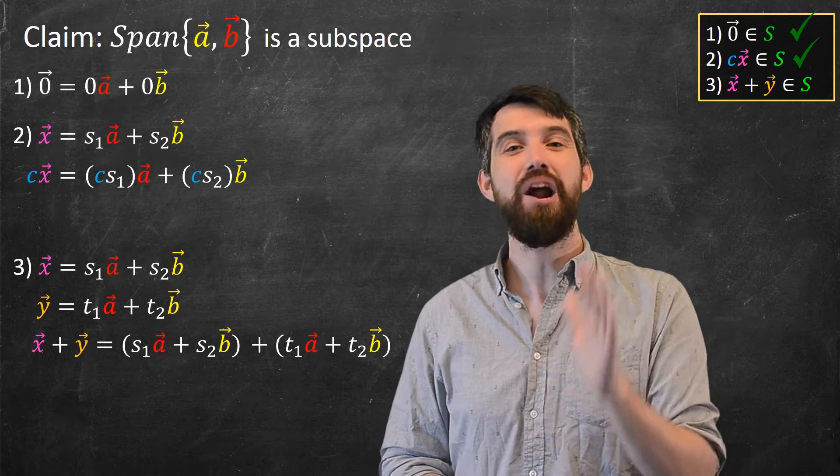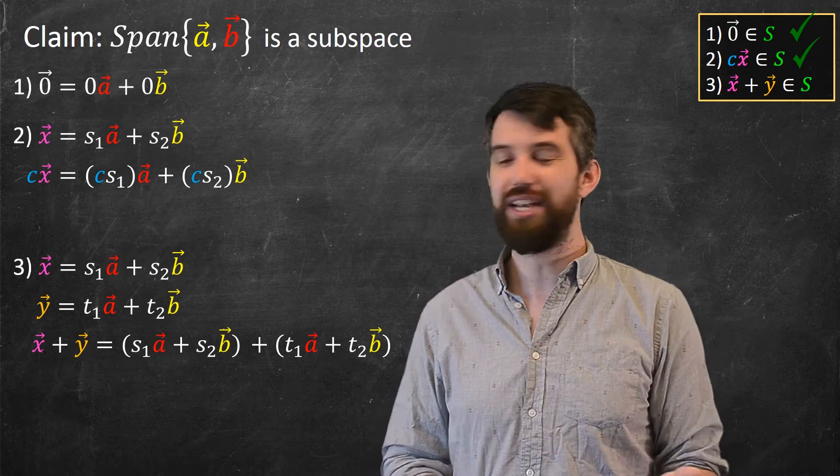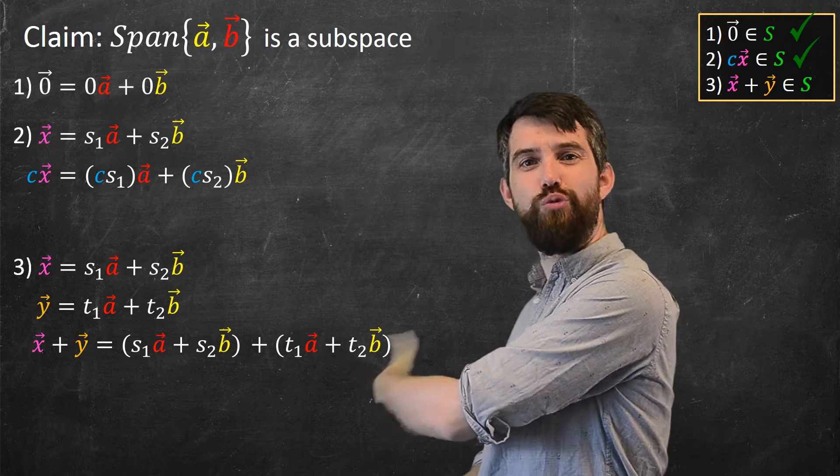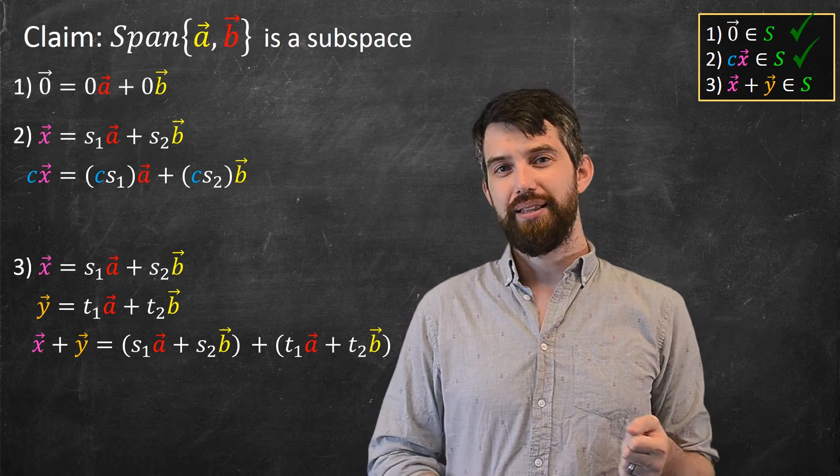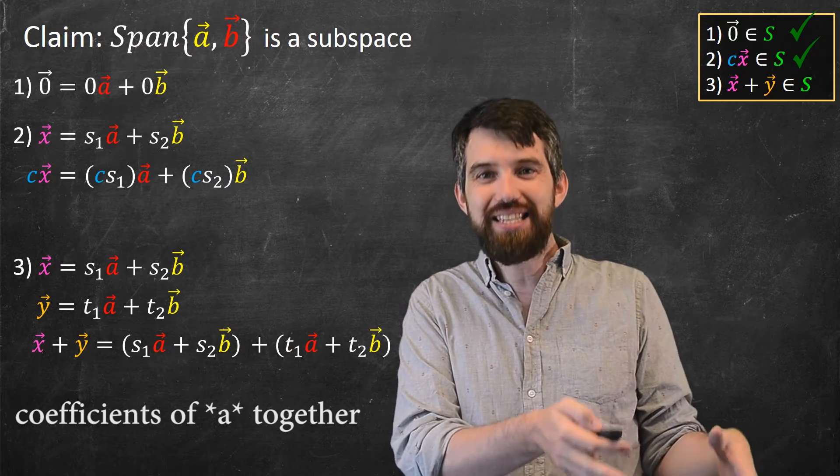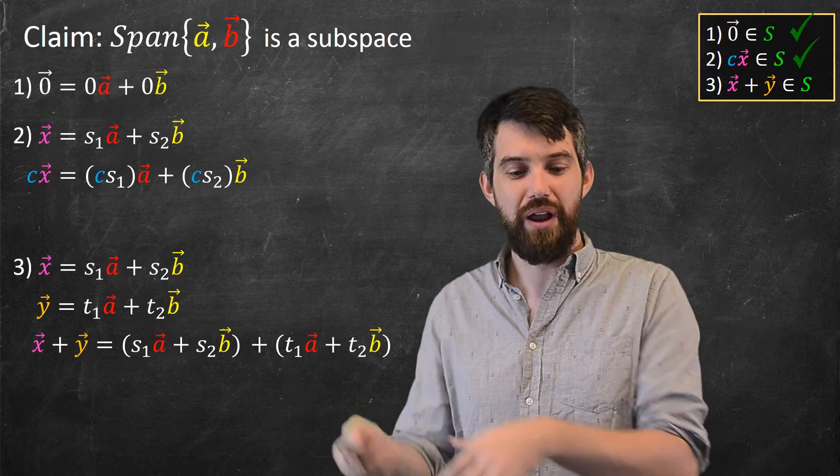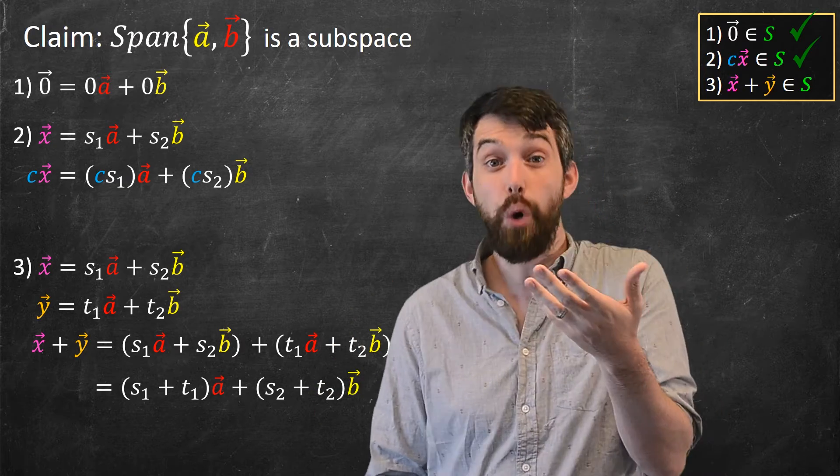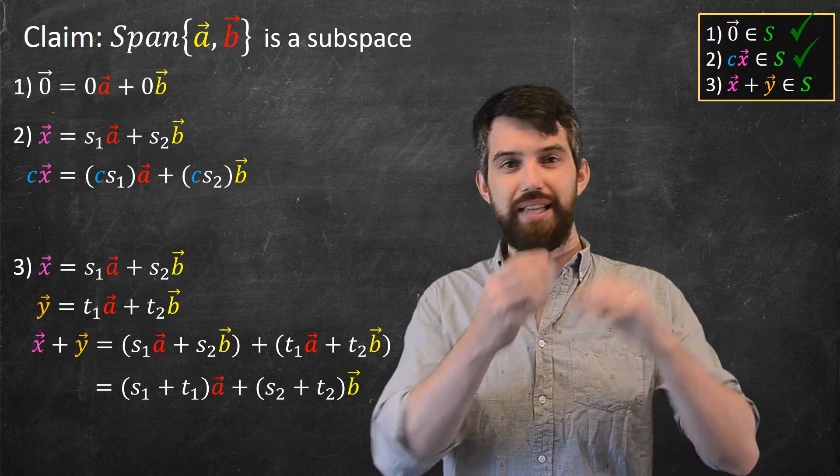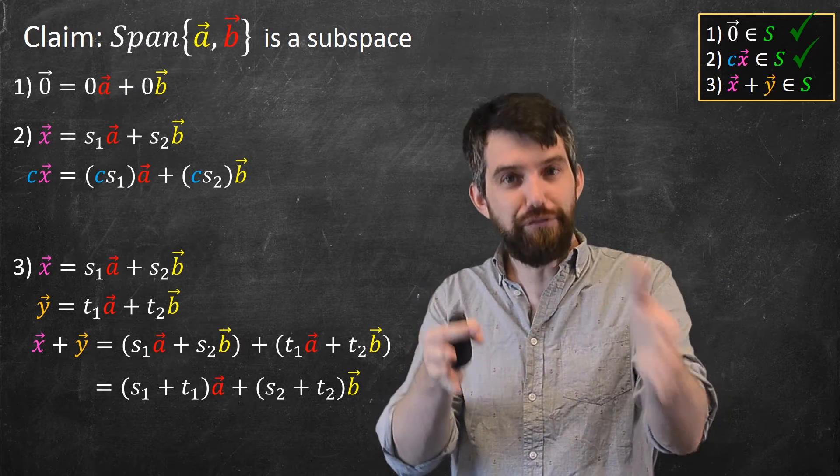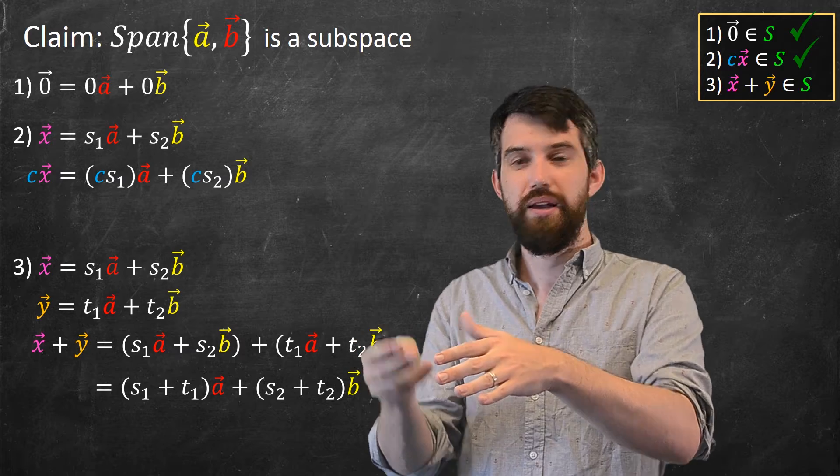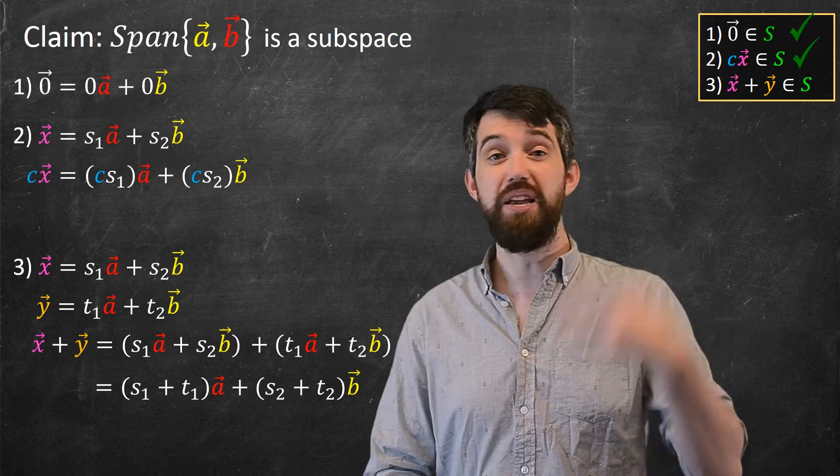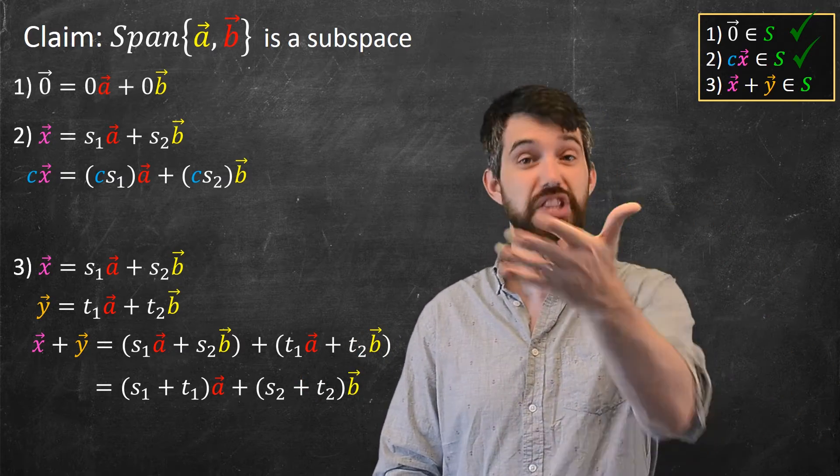Now, again, I want to apply linearity of vector addition and scalar multiplication. I can rearrange this. I've got all the different rules of being a vector space. Let's put all of the coefficients to S together and the coefficients of B together. So what do I get? I get the S1 plus T1, a coefficient, times the A, plus S2 plus T2, a different coefficient, times the B. So this is just a linear combination of A and B. It's coefficients multiplied by the vectors and then added up.